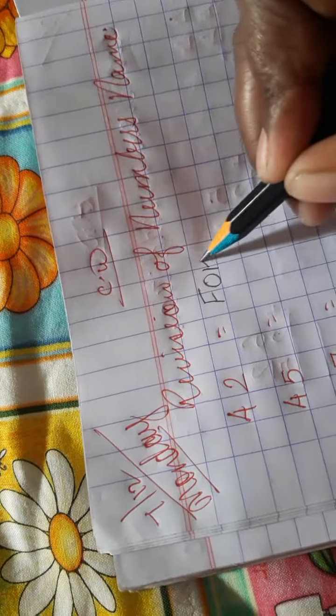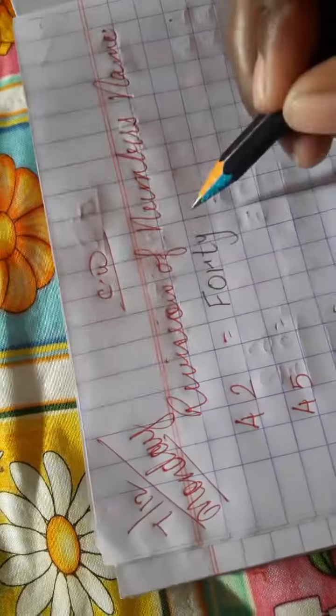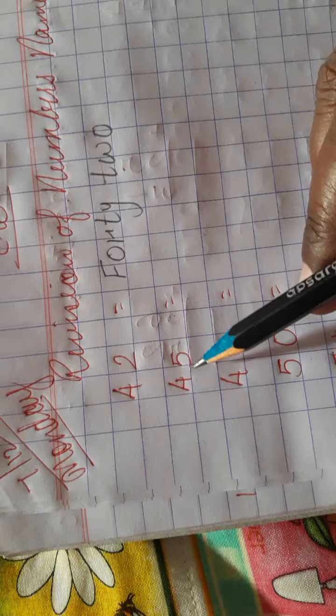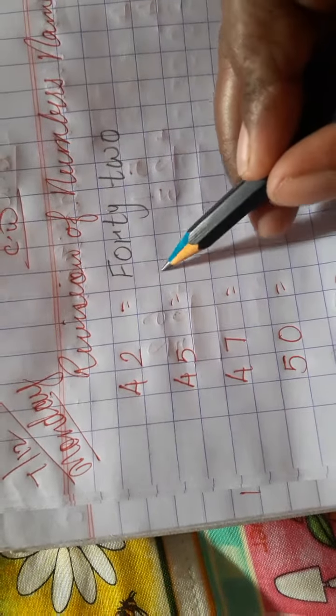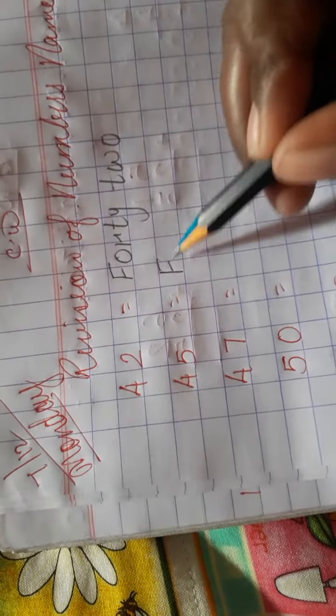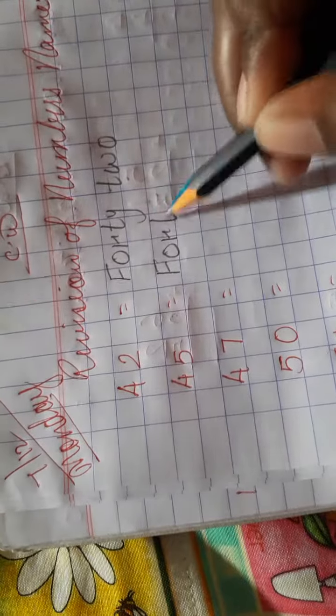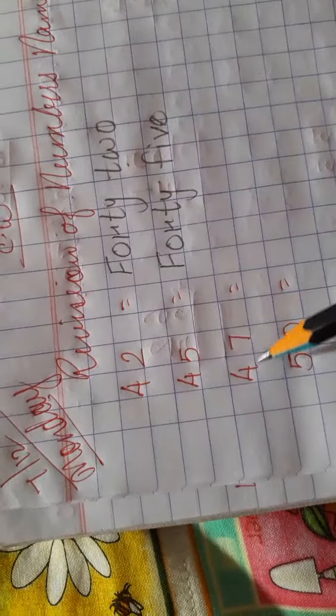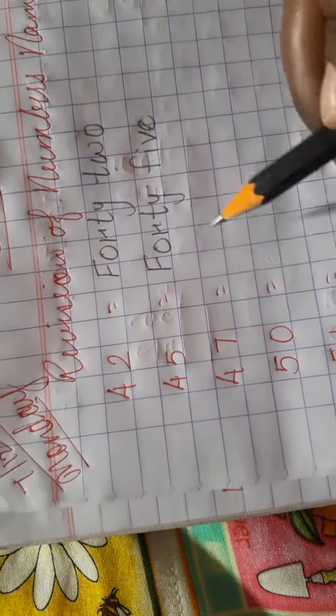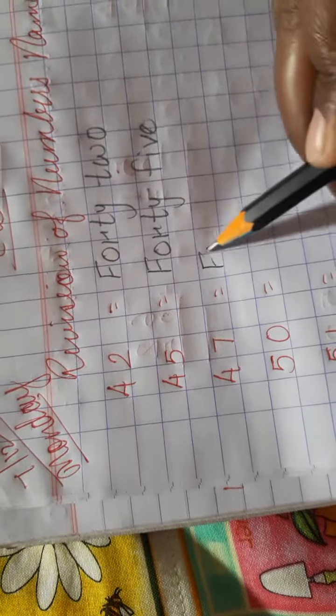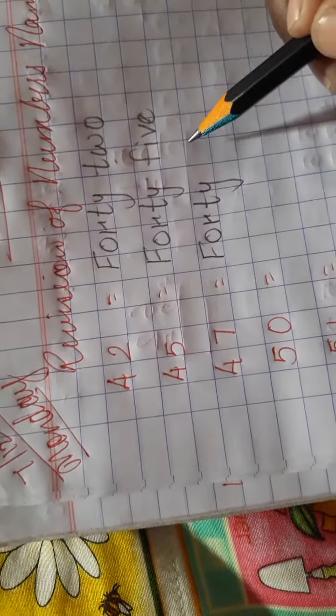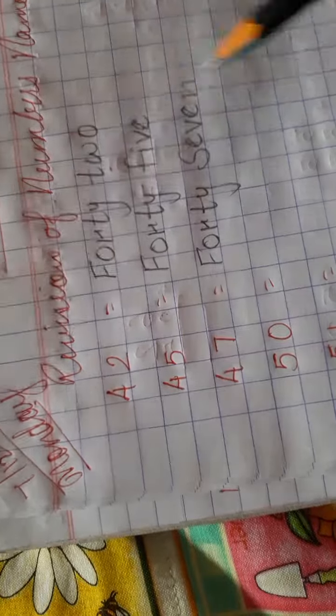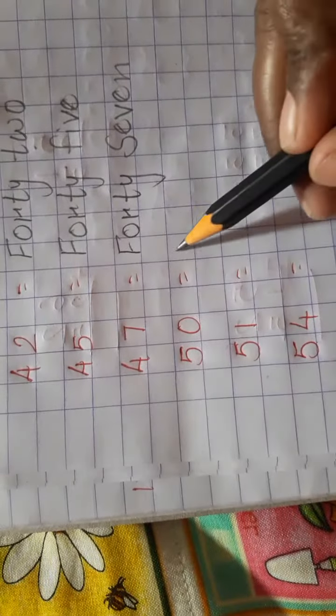F-O-R-T-Y, 40, T-W-O, 2. Next, 45: F-O-R-T-Y, 40, F-I-V-E, 5. Next is 47: F-O-R-T-Y, 40, S-E-V-E-N, 7. 47.